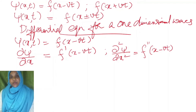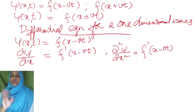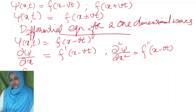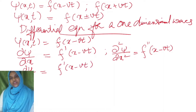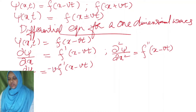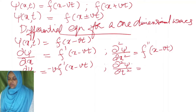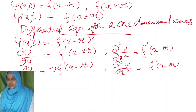Now we take the partial derivative of ψ with respect to t: ∂ψ/∂t = f′(x − vt) multiplied by (−v), since the argument has a coefficient of −v. Then we take the second partial derivative with respect to t: ∂²ψ/∂t² = f″(x − vt) multiplied by (−v)(−v) = +v². So ∂²ψ/∂t² = v² · f″(x − vt).